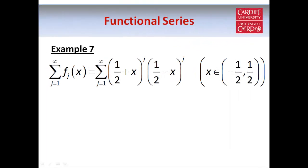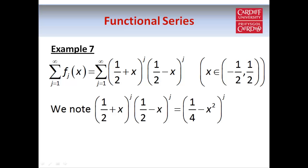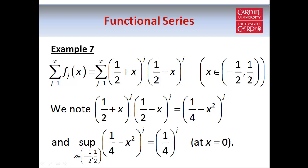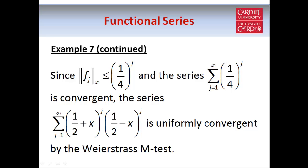Here's another example. This time our domain is the open interval from minus a half to a half. We notice that half plus x times half minus x equals a quarter minus x squared, so we can rewrite the terms as a quarter minus x squared to the power j. The supremum over all x in the domain occurs when x equals zero, giving a quarter to the power j. Since the series of quarter to the power j is a geometric series with common ratio smaller than one in absolute value, it is convergent, and therefore by the Weierstrass M-test our functional series is uniformly convergent.